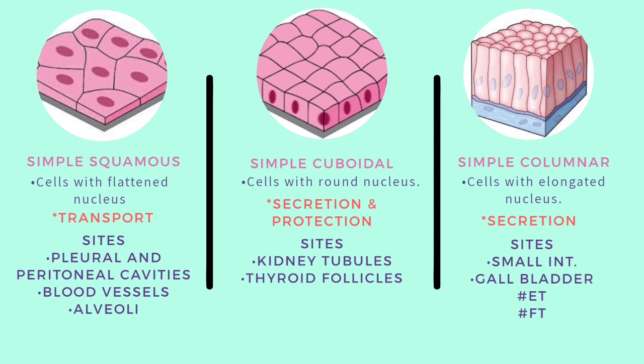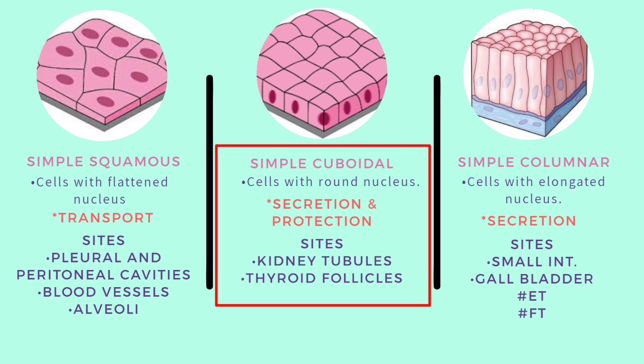Moving on to simple cuboidal epithelium — as the name suggests, the cells are cuboidal in shape and appear square on cross section, with a large rounded centrally placed nucleus. The main functions of simple cuboidal epithelium are secretion and providing protection. It is found in the lumens of the kidney where it serves absorption, and also in the thyroid around the follicles where it serves the function of secretion of thyroid hormone precursors.